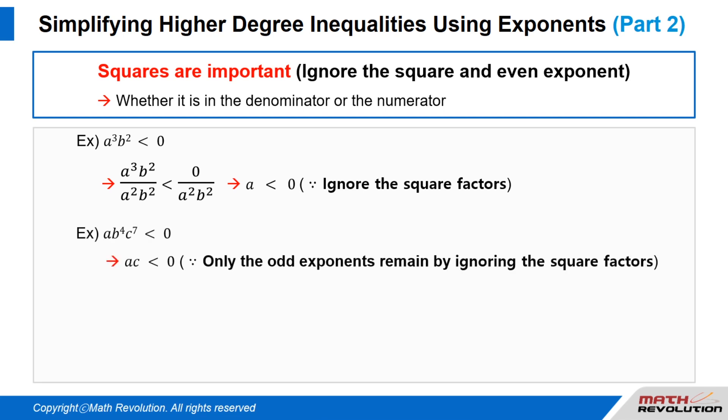If a times b to the power of 4 times c to the power of 7 is less than zero, then this can be written as a times c is less than zero because only the odd exponents remain when we ignore the squares.